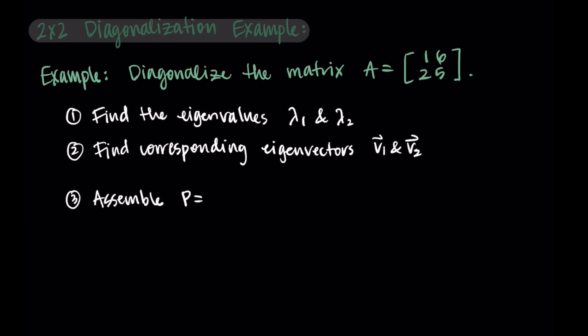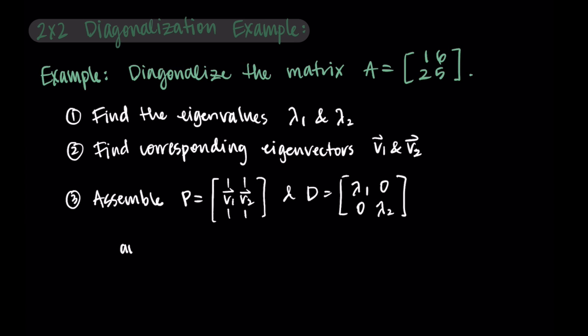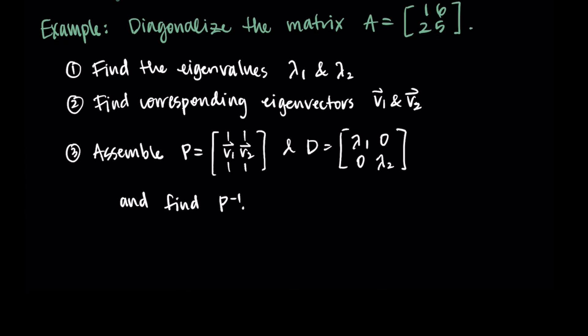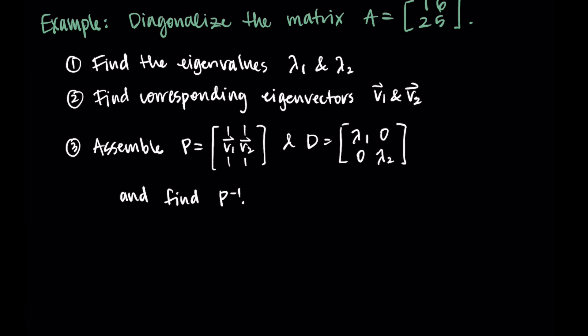Then we're going to assemble our matrices. P will have columns made from the eigenvectors we chose, and D will have the eigenvalues on the diagonal. As part of finding the diagonalization, we'll also need to find the inverse of P. Since this is just a two by two case, I'm going to do this whole process by hand. When this gets to be larger matrices — three by three and larger — it's really much better to use technology to help us out. But since this is a two by two, we're going to practice doing everything by hand.